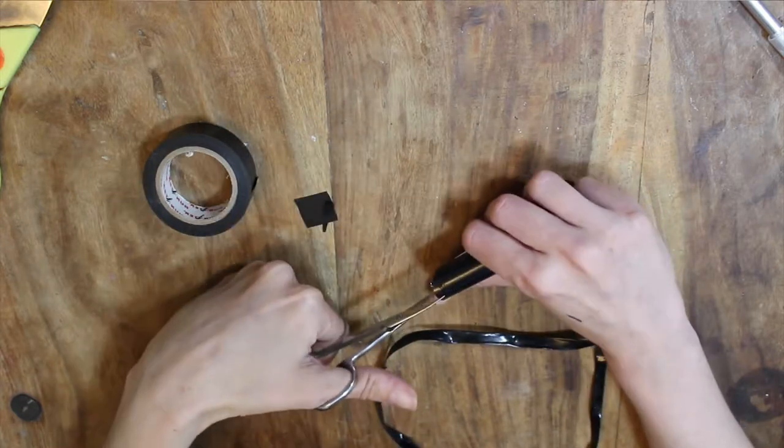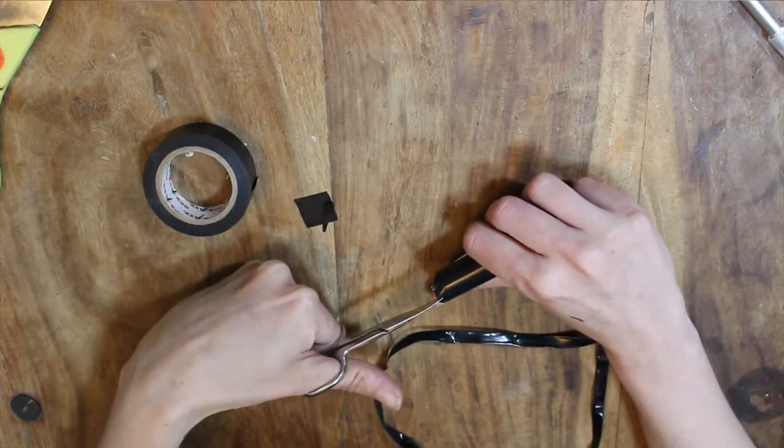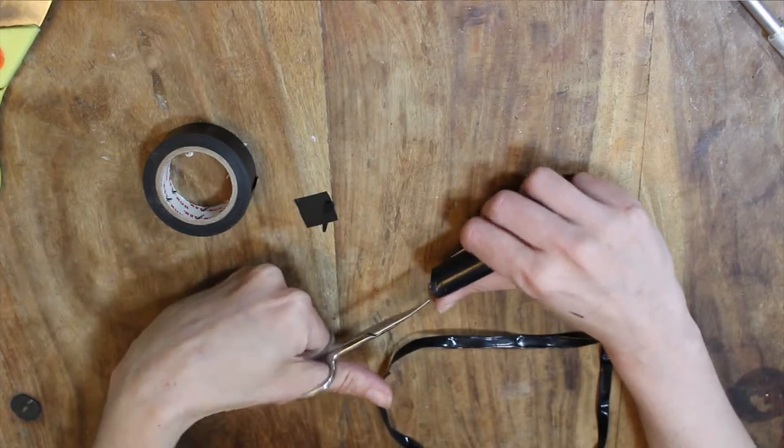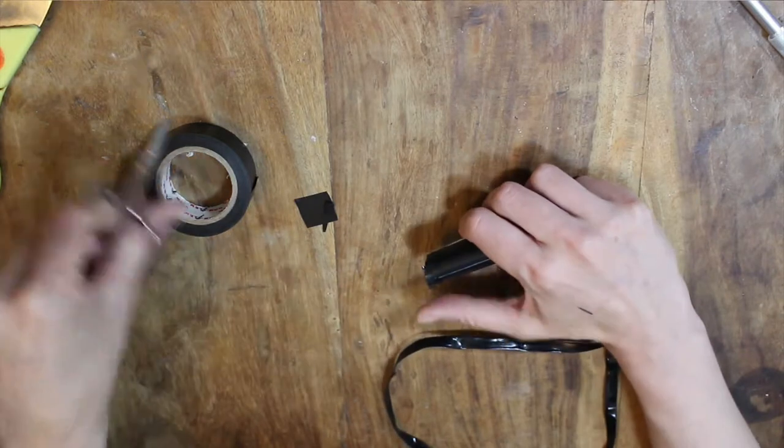If you want to avoid the folds you get when you wrap it underneath, then you can cut little slits in it and then everything will fold under a bit neater.